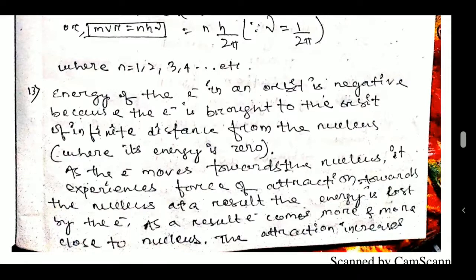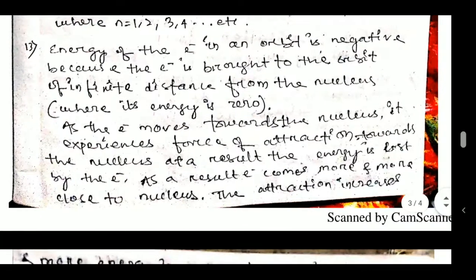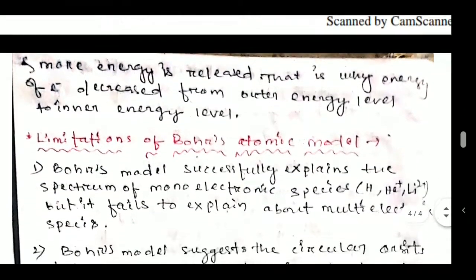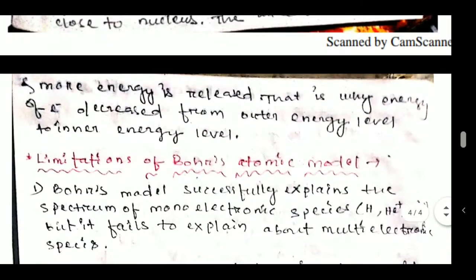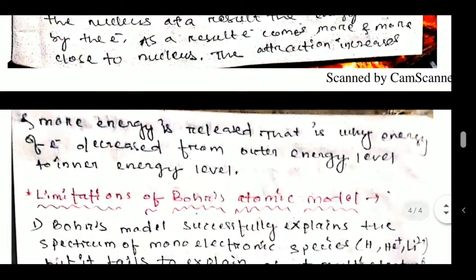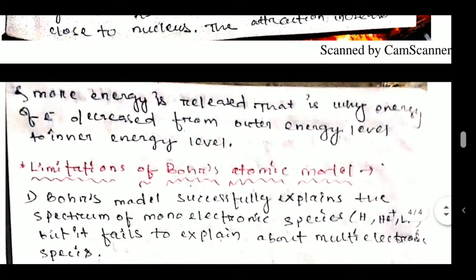At the point where the electron's energy becomes zero, it successively loses more energy and becomes negative. That is why the energy of the electron is in negative form. These are the postulates of Bohr's atomic model. Important questions to consider: why is the energy of the electron negative, and why does energy decrease from outer to inner energy level?